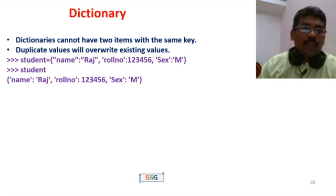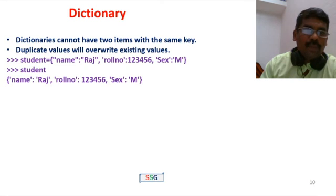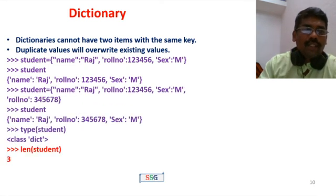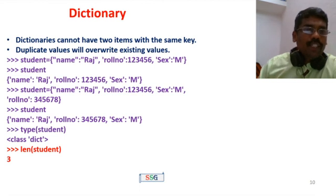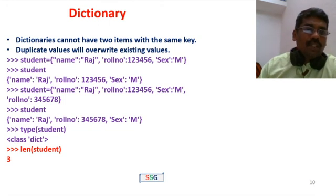Duplicate values will override existing values. For example, if name is 'Raj' and role is a number, and a second duplicate key is added, the new value overrides the first. The student dictionary type is class 'dict'. You can also print the length of the student dictionary — it shows the number of key-value pairs: name, roll number, and section gives 3.